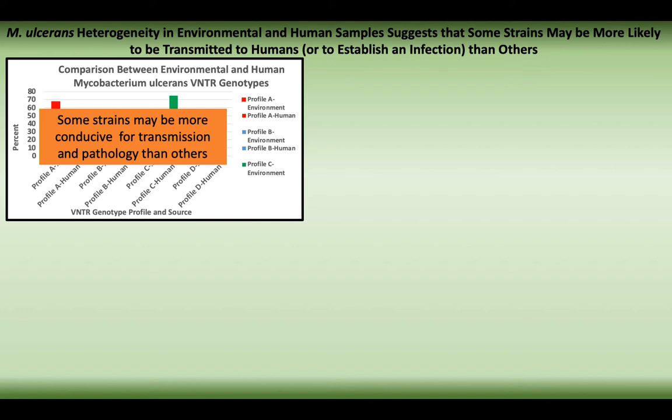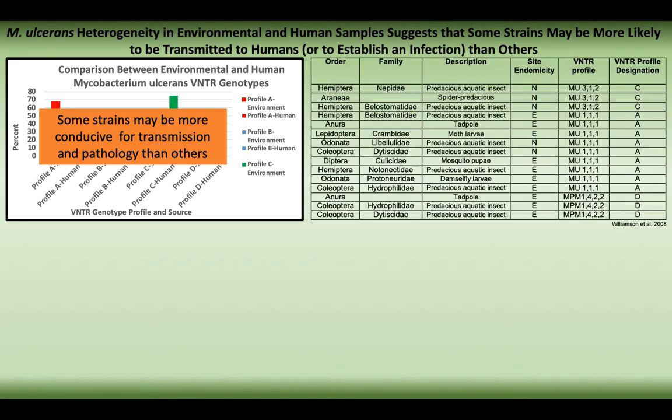What this means is that there could be some strains that are more likely to just persist in the environment — environmental persisters — whereas other strains may be more likely to be human colonizers when a person enters these aquatic habitats. Understanding which strains are more likely to colonize humans is really important. We also used this profiling method on invertebrates, vertebrates, and plants, and found a great deal of diversity in our different M. ulcerans profiles.